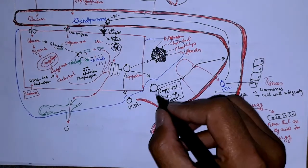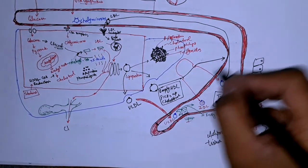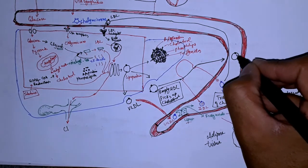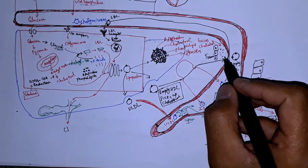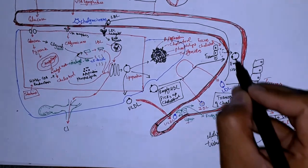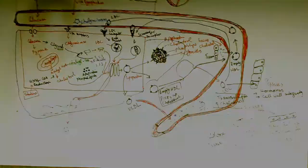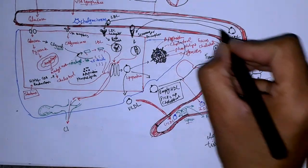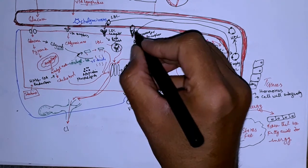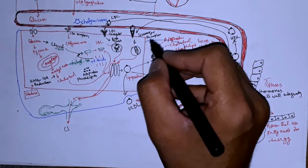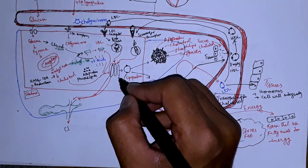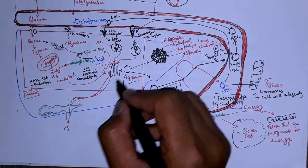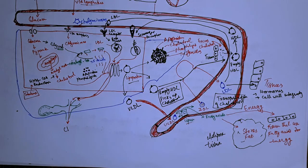Finally, the function of nascent HDL is to pick up cholesterol from the circulation. Cells or tissues that have excess cholesterol have it taken up by nascent HDL, which is then converted to mature HDL. This HDL is taken back to the liver by circulation where it binds to scavenger receptors, is endocytosed, and the cholesterol is either used by the Golgi apparatus for production of more lipoprotein or excreted through bile.